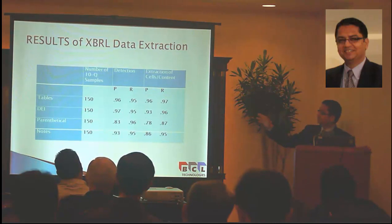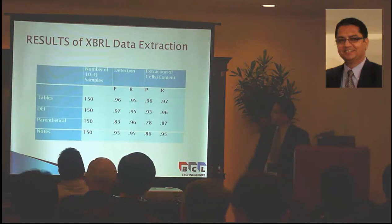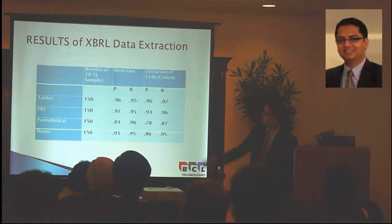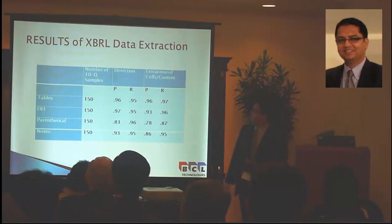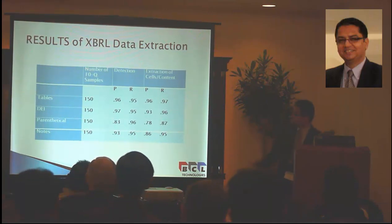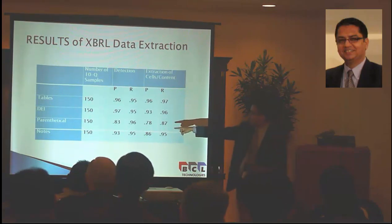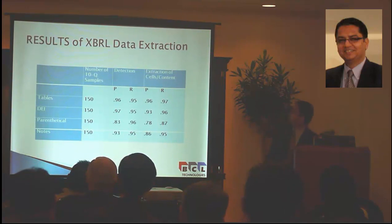Some results: this is pre-tagging for block text. We are using precision and recall as standard evaluation mechanisms. For tables, we are getting mid-90s for detection and extraction of cells, which is not bad. DEI is around 97 to 93 percent, which is very good. Parenting is 83 and 78 percent — this is a known issue, attributable to variability in the data. For notes, we are getting good scores for detection and extraction of cell content.